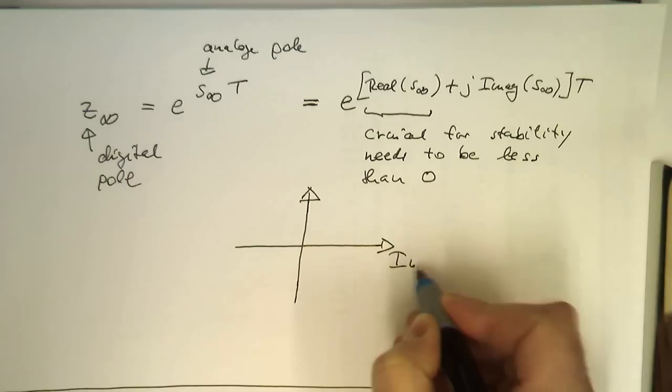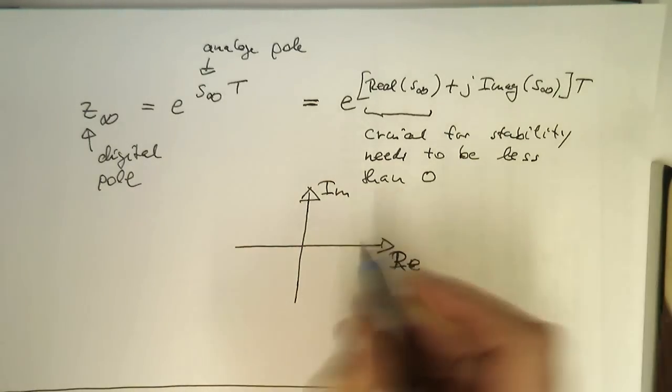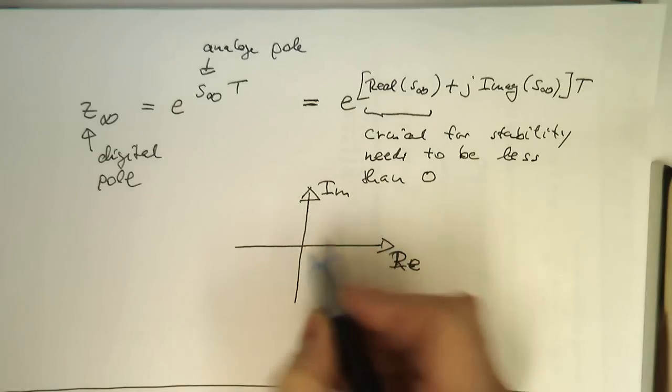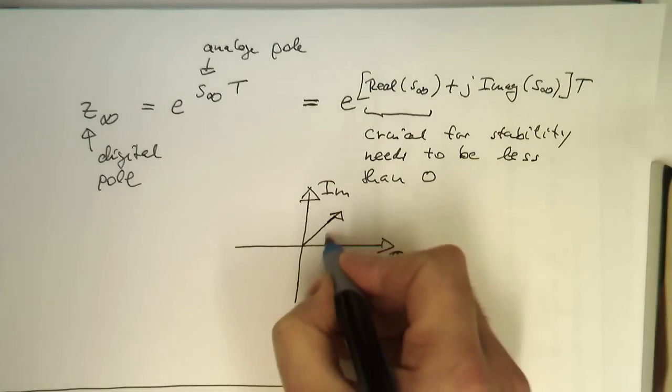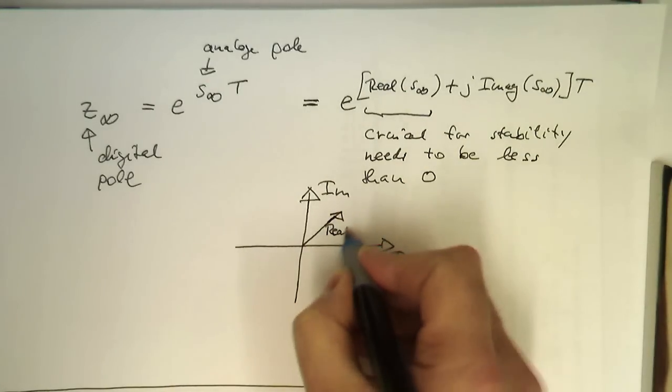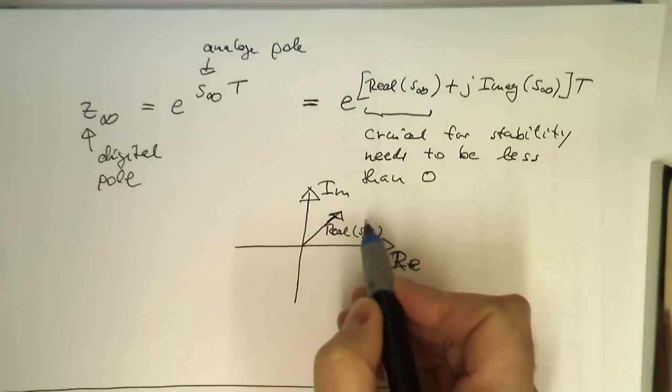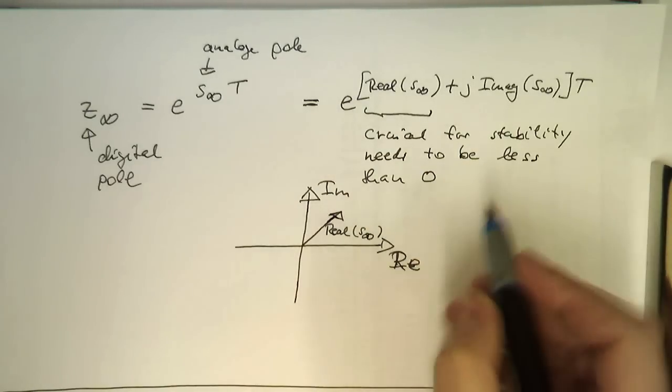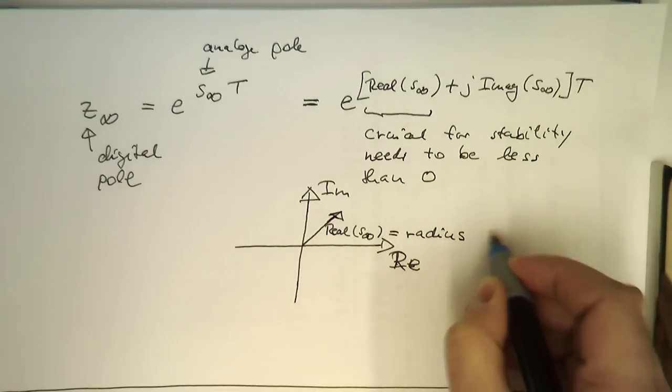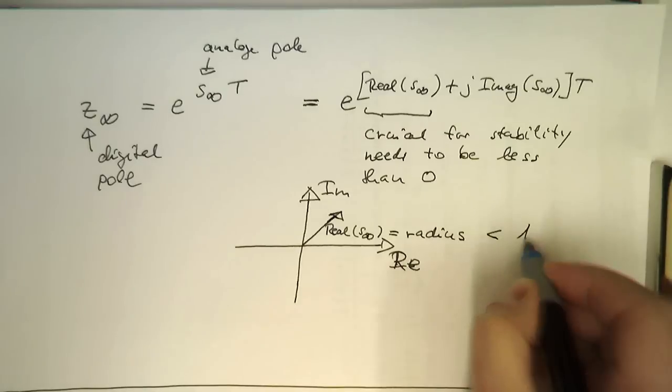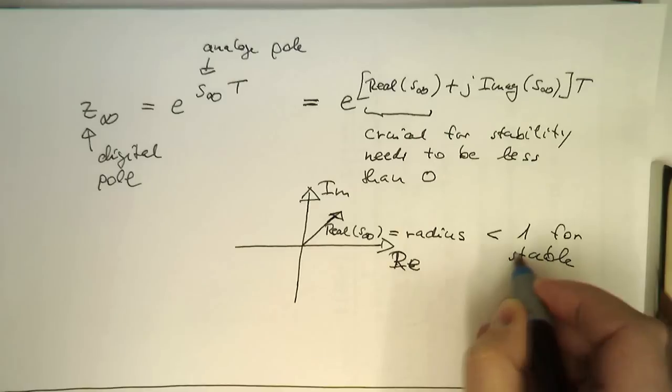If this is here, this is our real part here and this is our imaginary part here, just have it a bit bigger. Now the real part of s infinity, this defines the radius of our exponential here. That's the radius. And this needs to be smaller than one for stable filters.